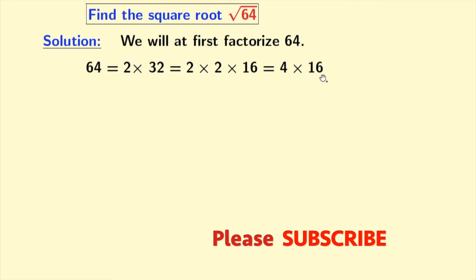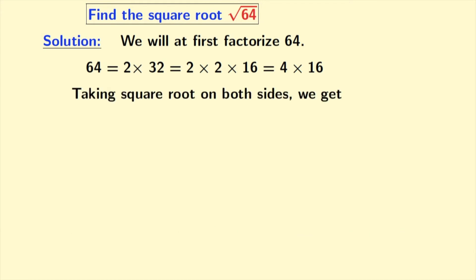Now, we will take square root on both sides and doing that we get square root of 64 is equal to square root of 4 times 16. Rewriting this, we get square root of 4 times square root of 16.